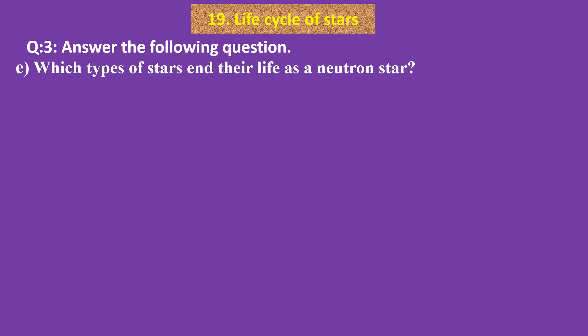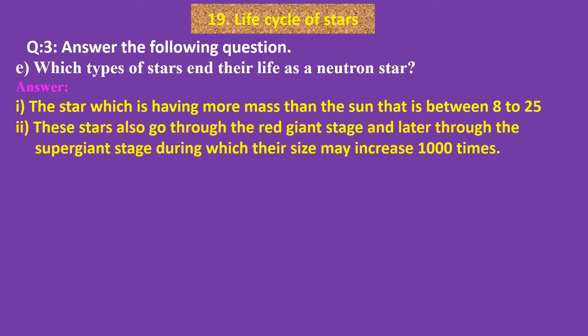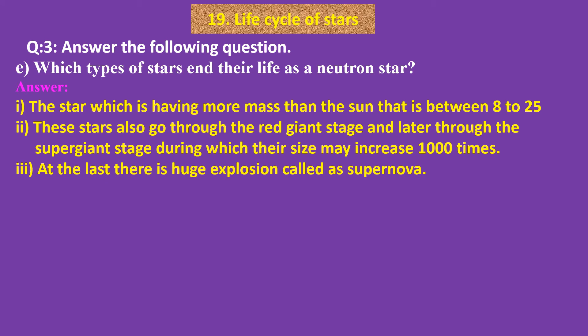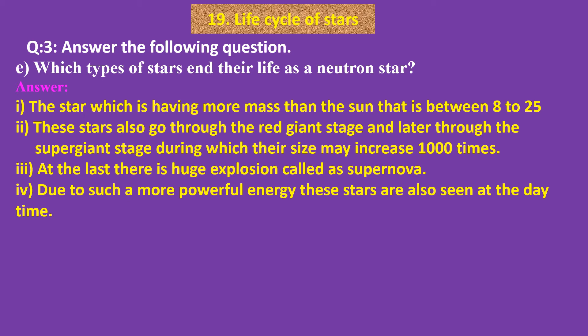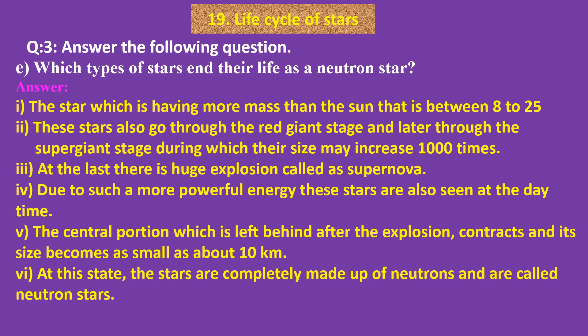E. Which types of stars end their life as a neutron star? Answer: Stars having more mass than the sun — that is, between 8 to 25 solar masses. These stars go through the red giant stage and later through the super giant stage, during which their size may increase one thousand times. At the last stage there is a huge explosion called a supernova. Due to such powerful energy, these stars are also seen during the daytime. The central portion left behind after the explosion contracts and its size becomes as small as about 10 kilometers. At this state the stars are completely made up of neutrons and are called neutron stars.